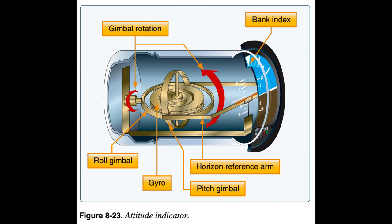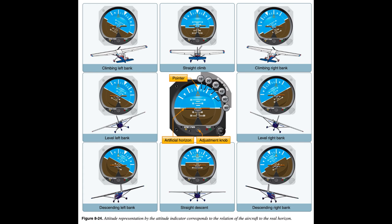A number of modern attitude indicators do not tumble. Every pilot should be able to interpret the banking scale. Most banking scale indicators on the top of the instrument move in the same direction as that in which the aircraft is actually banked. Some other models move in the opposite direction. This scale should be used only to control the degree of desired bank; the relationship of the miniature aircraft to the horizon bar should be used for an indication of the direction of bank. The attitude indicator is reliable and the most realistic flight instrument on the instrument panel, with indications that are very close approximations of the actual attitude of the aircraft.